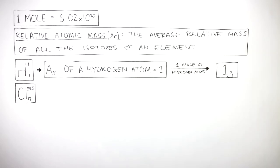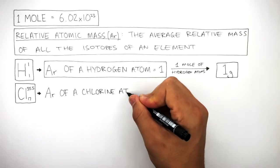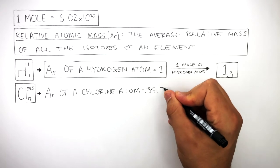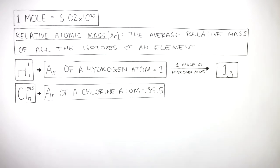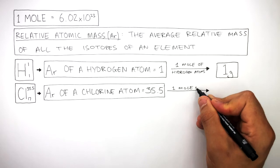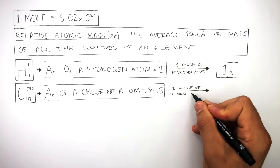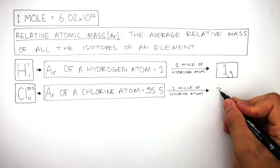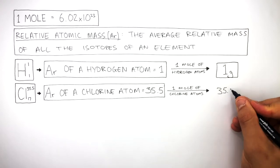This symbol represents a chlorine atom, and this information tells us that the AR of a chlorine atom is 35.5. To convert the AR into mass, we use the mole. One mole of chlorine atoms is equal to 35.5 grams.